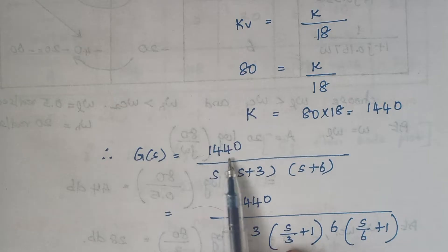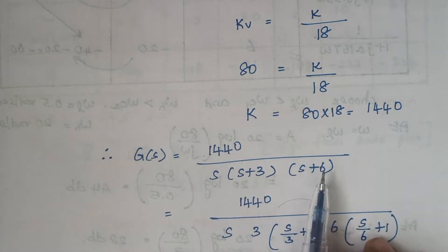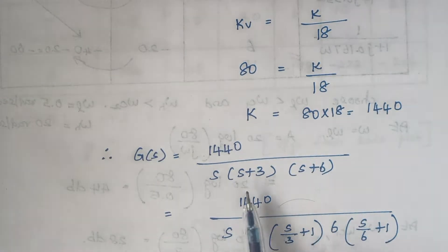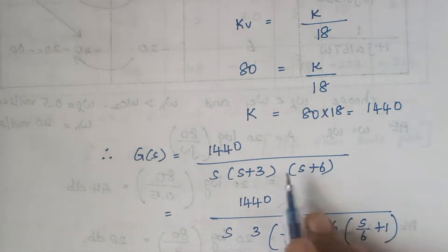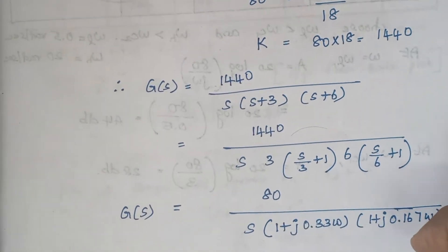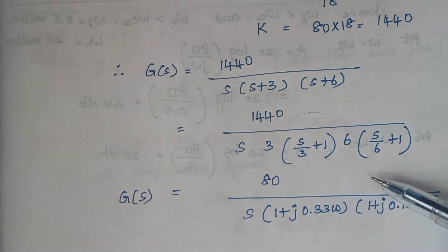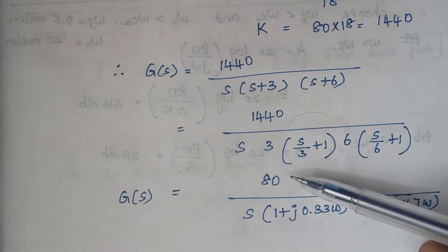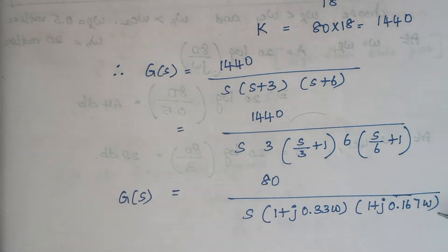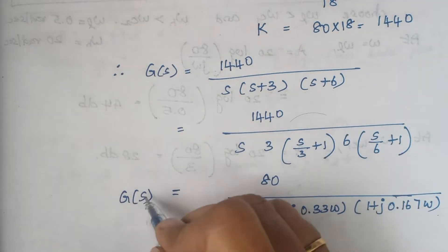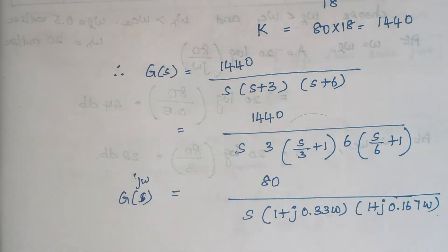Substituting this value, G(s) is equal to 1440 divided by s(s+3)(s+6). We are converting this transfer function into standard form — taking 3 outside from one expression and 6 outside from the other. After cancelling, the transfer function reduces to 80 divided by s(1 + j0.33ω)(1 + j0.167ω), giving us G(jω) in standard form.